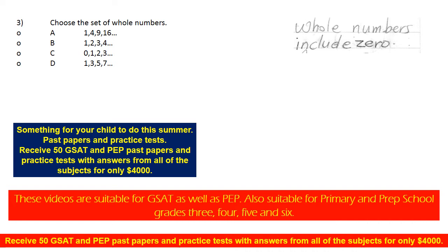So whole numbers would include all numbers as well as zero. Whole numbers start from 0, 1, 2, 3, 4, 5, 6, 7, 8, 9, 10, 11, 12, and so on.